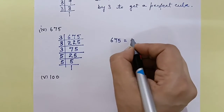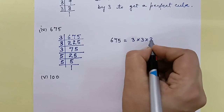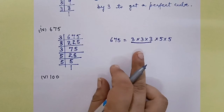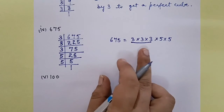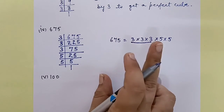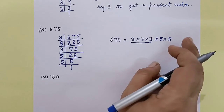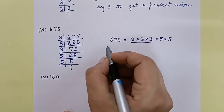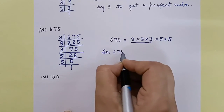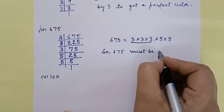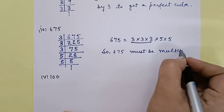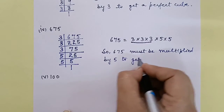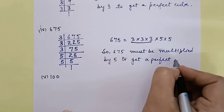We have three 3s and two 5s. In cubes, we make groups of 3 just like pairs of 2 in squares. The group of three 3s is complete. But for 5s, only two are there — one 5 is short. So 675 must be multiplied by 5 to get a perfect cube. That's it.